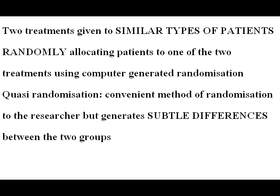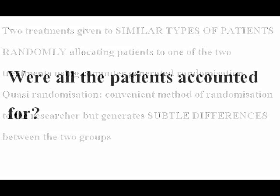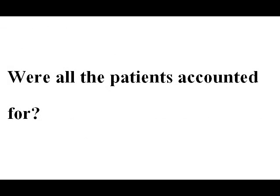If randomization has not been used, the patients receiving the two treatments are likely to be systematically different. The term 'quasi-randomized' is a warning signal. It usually means that patients have been allocated to treatments using a method which is convenient to the researchers — for example, by day of the week. But this convenience itself may result in subtle differences between the two groups, which can really affect the accuracy of the results.